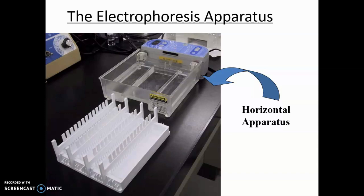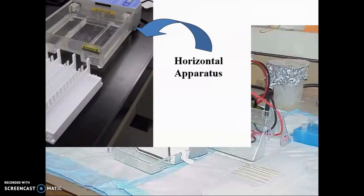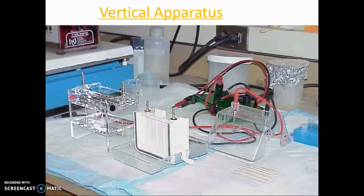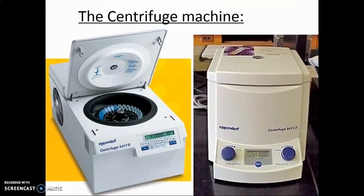Vertical gel electrophoresis utilizes the polyacrylamide gel which has a smaller pore size compared to agarose gel. After stacking, the resolution gel separates proteins based on molecular size. The top chamber of this system contains the cathode while the bottom chamber contains the anode.